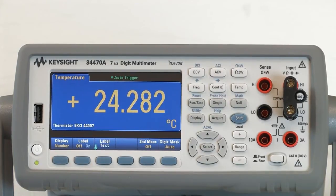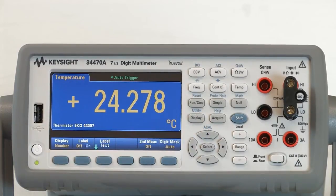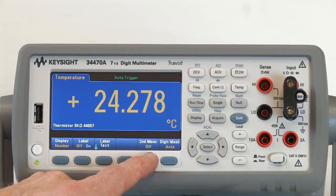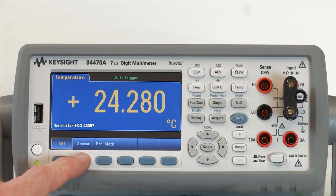To do so, we can simply alter the display by pressing Display, Secondary Measurement, enabling that, and then selecting Sensor.